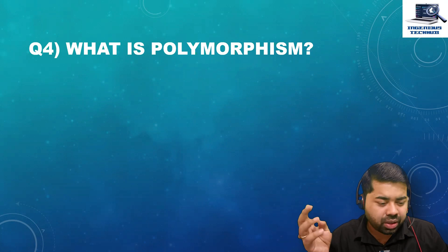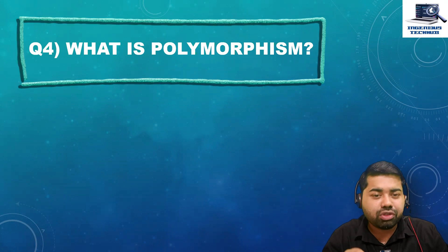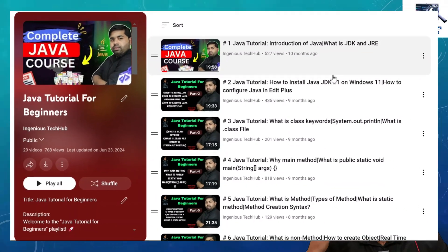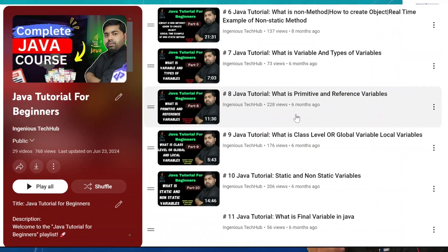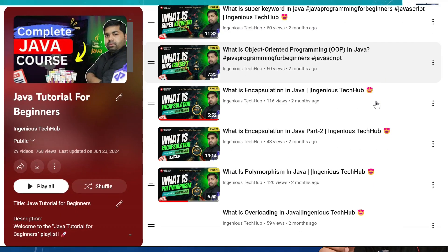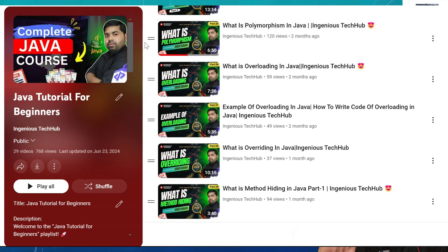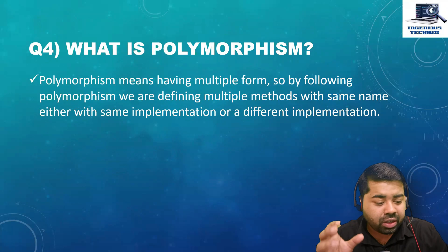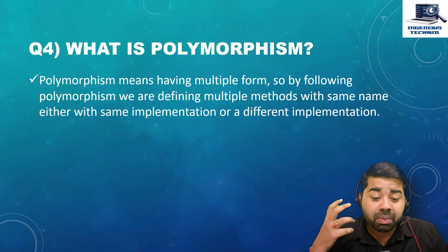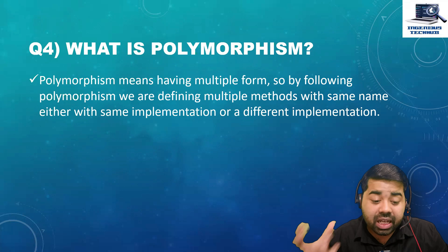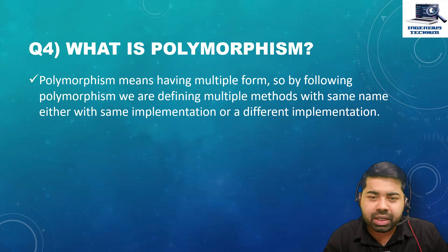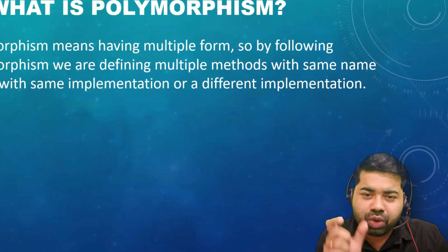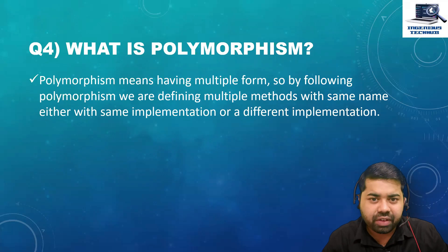You might forget something, so rating too high can leave a bad impression with the interviewer. What is polymorphism? I have created a Java tutorial — please watch it for depth. But in brief: polymorphism means having multiple forms. By following polymorphism, we define multiple methods with the same name, either with the same or different implementations. In general terms, polymorphism means one person having different behavior.